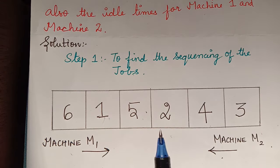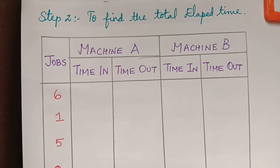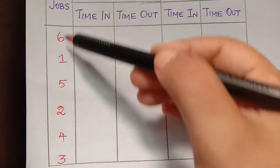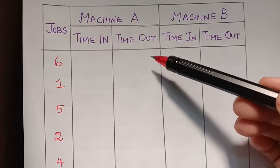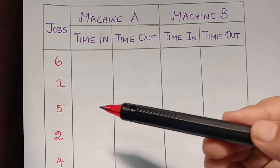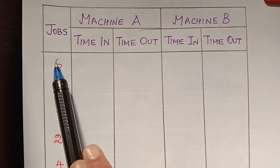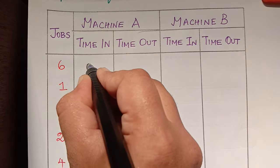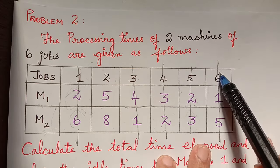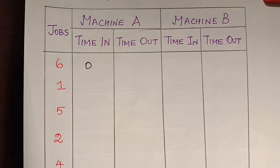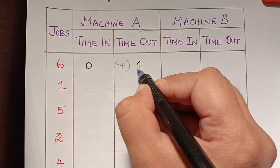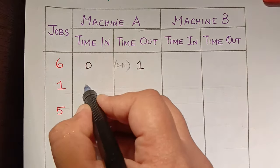Next, we calculate the total elapsed time by drawing a table with jobs in the sequence we found. We find the time-in and time-out for machine A first. The time-in for the first job is always zero. For job six, the processing time in machine one is one, so time-out = 0 + 1 = 1.